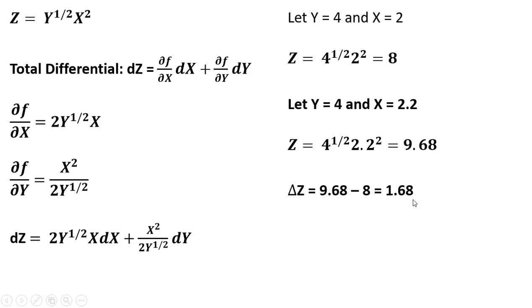We could also approximate the change by using the total differential. So we're going to plug in our original values for y and x. So y is 4 and x is 2, and I make that substitution right here. So in parentheses, our original value for y is 4, our original value for x is 2.